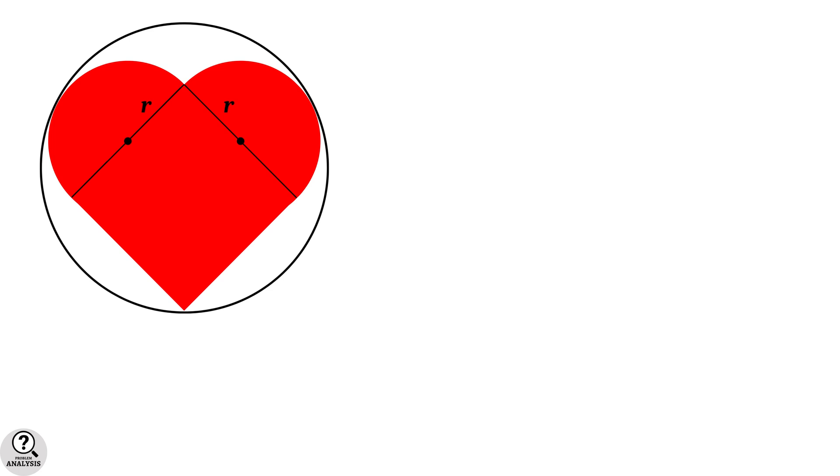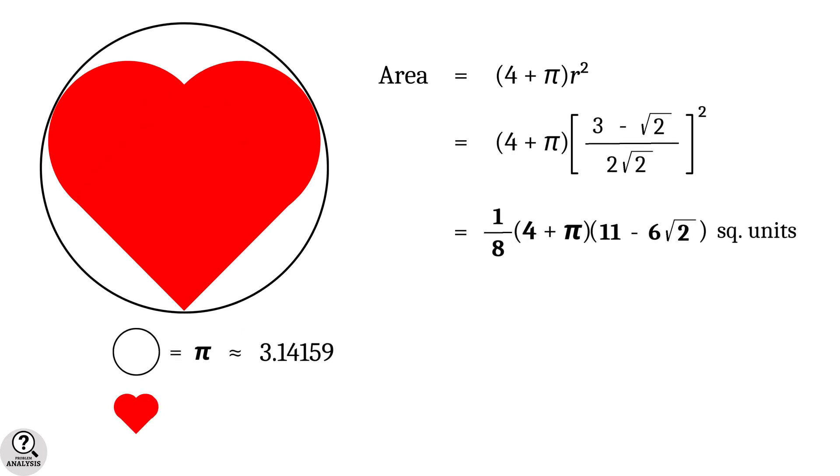That's it. We already have the area of the heart shape is 4 plus pi into r square, and we got r equal to 3 minus root 2 divided by 2 root 2. Substitute and simplify. That gives, area equal to 1 by 8 into 4 plus pi into 11 minus 6 root 2 square units, which is approximately equal to 2.244887 square units. And that is the solution we are looking for.